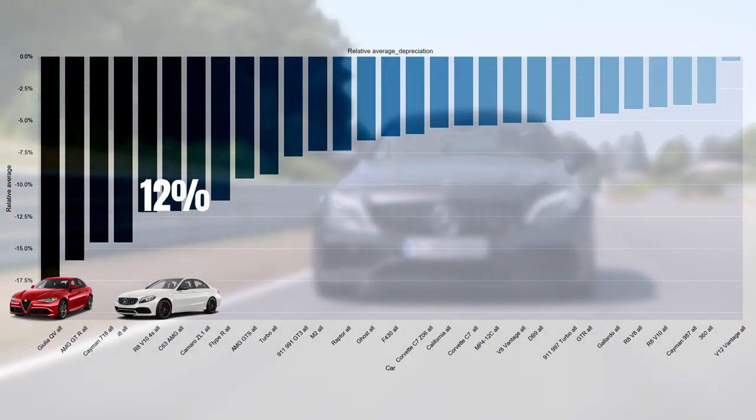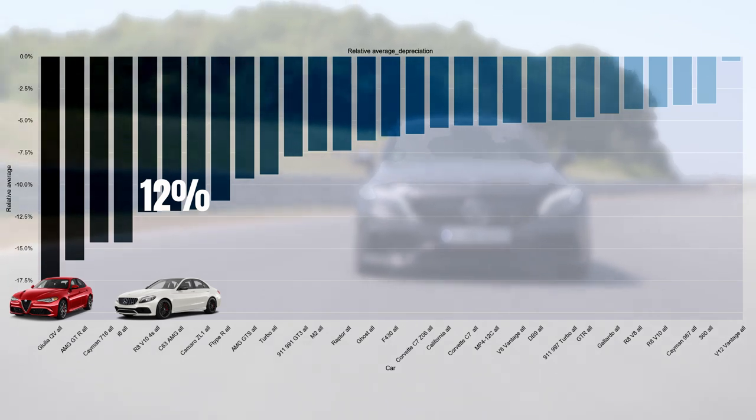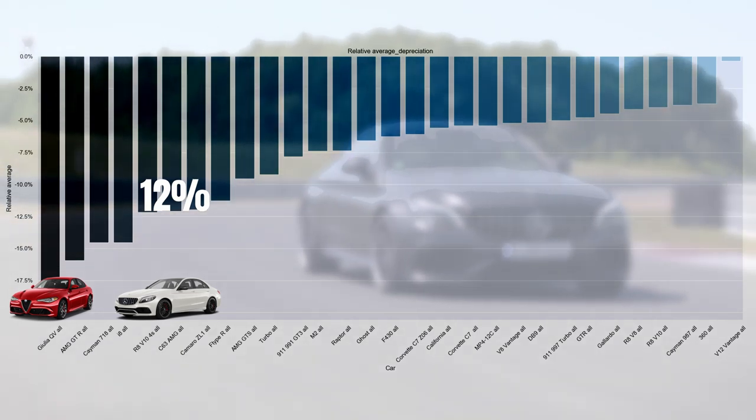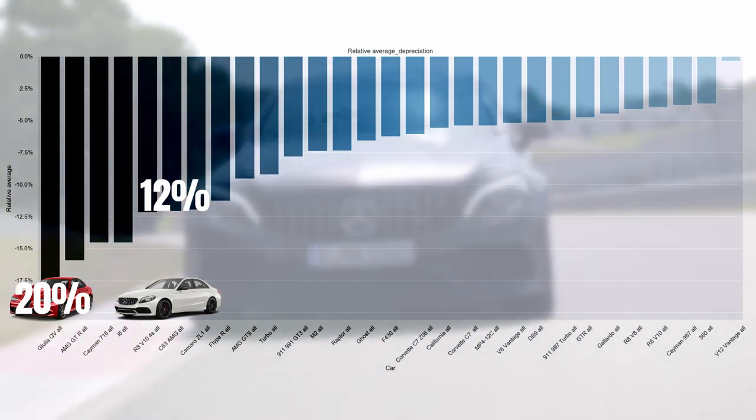Compared to the Giulia however, which is one of the main competitors of the C63, it is not too bad. That car has a relative rate of 20%. Admittedly though, it is also still slightly younger as it came a bit later on the market.